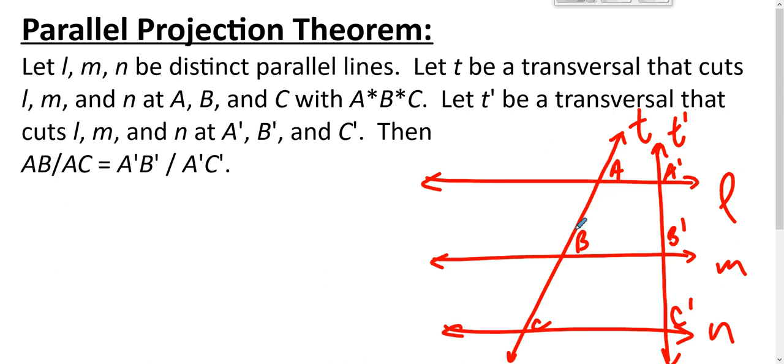Then the ratio of AB to AC is the ratio of A prime B prime to A prime C prime. This is the parallel projection theorem.